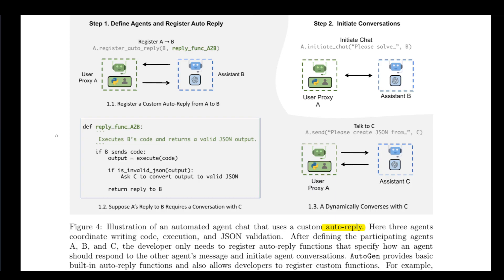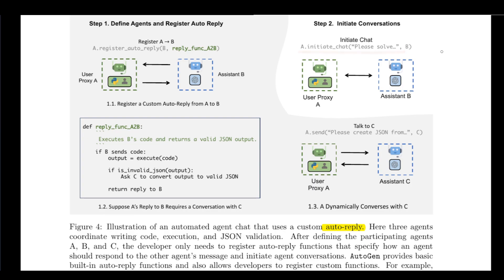How do these agents communicate with each other? The good news is that the hassle of communication is all managed by Autogen through what is called the auto-reply mechanism. All we have to do is register auto-reply between two agents, say A and B, as a first step. In the next step, we initiate the chat and Autogen takes care of the rest of the communication. If the process involves a third agent, say C, we can register a custom function that invokes a conversation with C — in this case, C validates the JSON response sent back from the system.